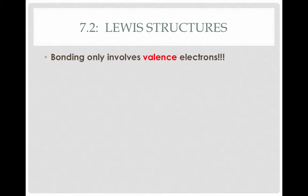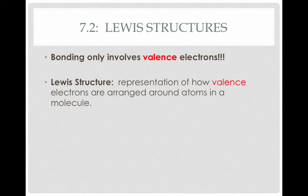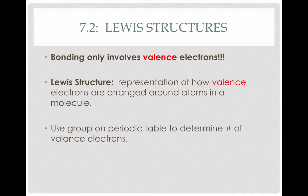When drawing Lewis structures, we only represent the valence electrons — electrons in the highest principal energy level. A Lewis structure represents how the valence electrons are arranged around atoms in a molecule. We can use the group on the periodic table to determine the number of valence electrons an atom will have. For example, neon has eight valence electrons — a full octet.